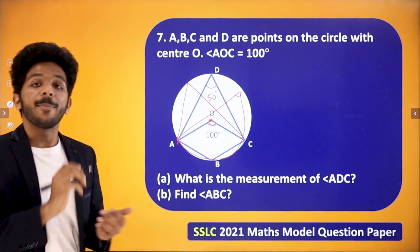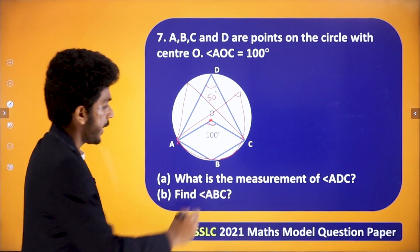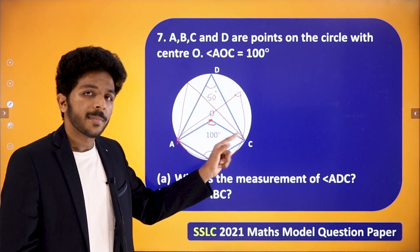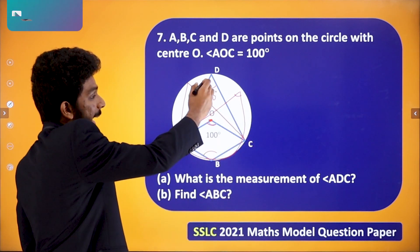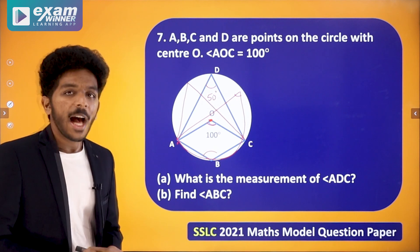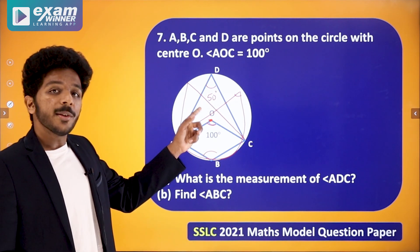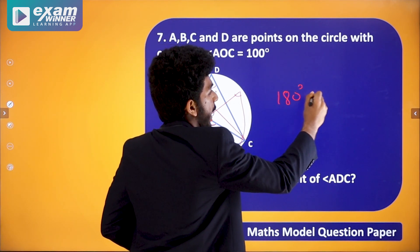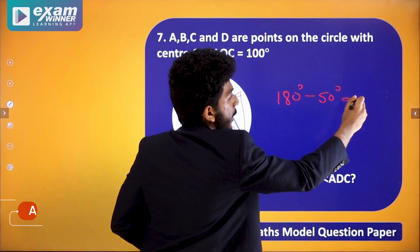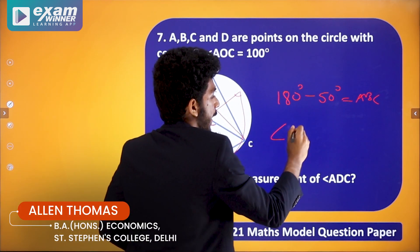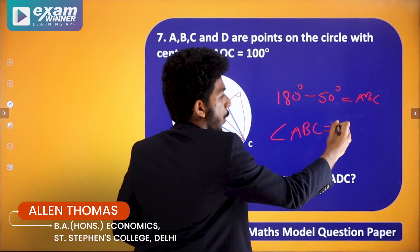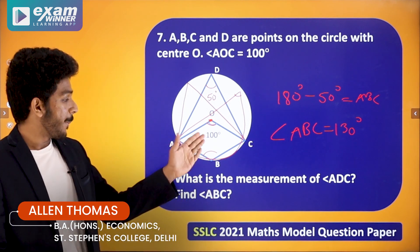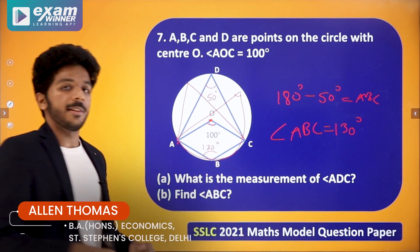Now what is angle ABC? ADC and ABC are opposite angles in a cyclic quadrilateral, so they are supplementary. ADC = 50 degrees, therefore ABC = 180 − 50 = 130 degrees. The answer is angle ABC equals 130 degrees.